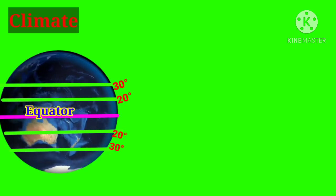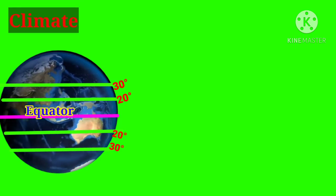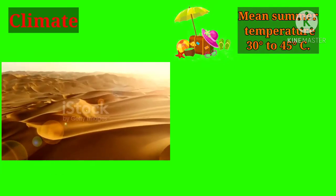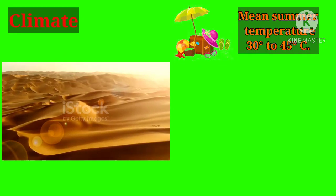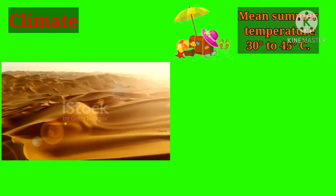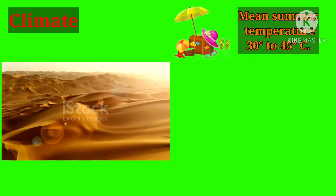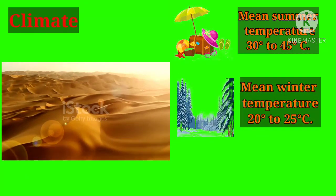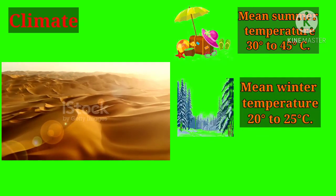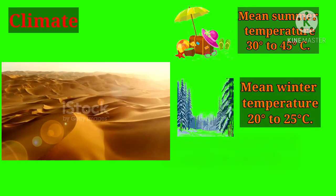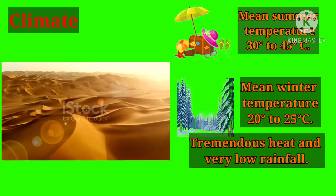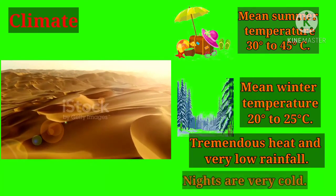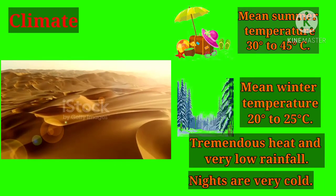Climate in hot desert regions: Mean summer temperatures are 30 to 45 degrees Celsius, and mean winter temperatures are 20 to 25 degrees Celsius. There is tremendous heat and very low rainfall. Nights are very cold here.